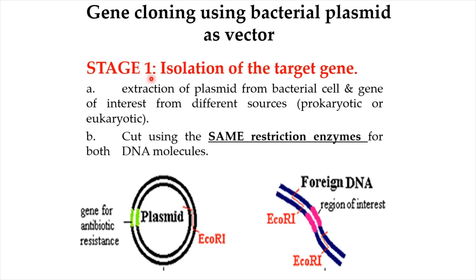Stage 1 is the isolation of the target gene. First, we need to extract the plasmid from bacterial cells and the gene of interest from different sources, such as prokaryotic or eukaryotic cells. Next, we cut the DNA molecules using the same restriction enzymes, to produce fragments with the same complementary sticky ends.